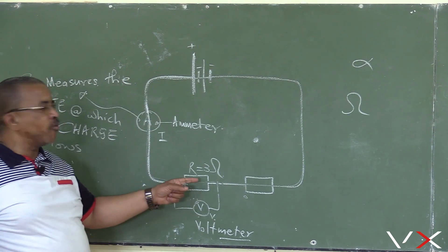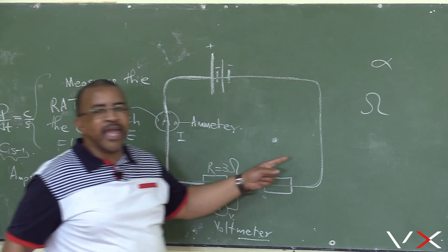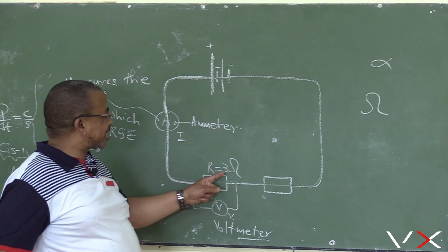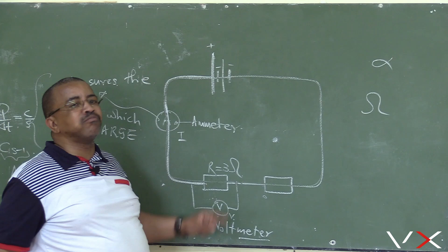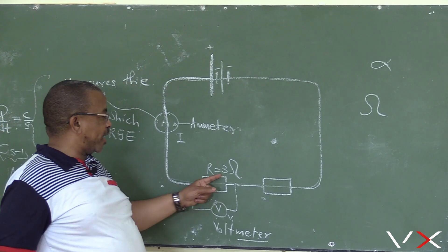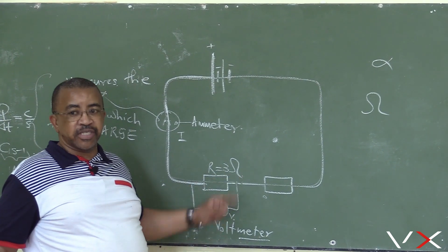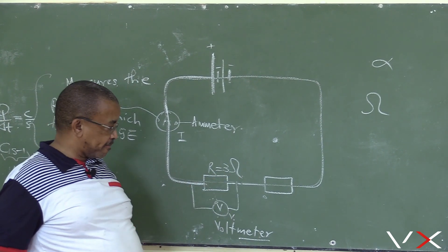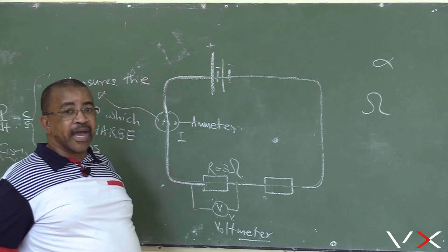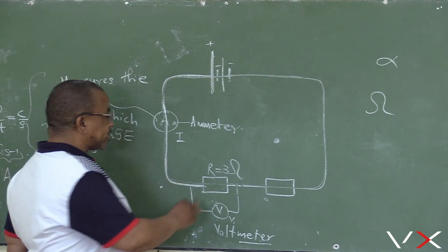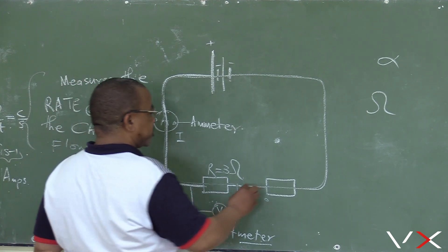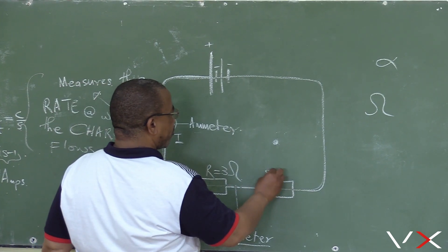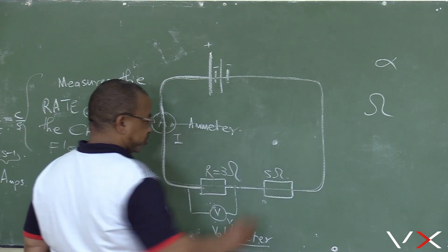So now, omega — this is 3 ohms, a resistor. Again it is 3 ohms, it is 5 ohms.